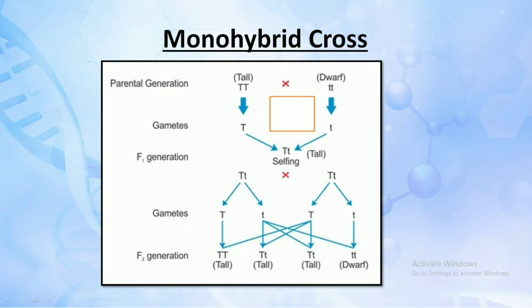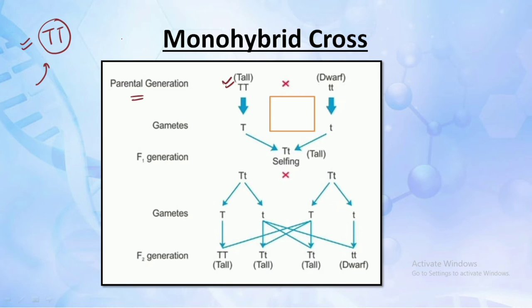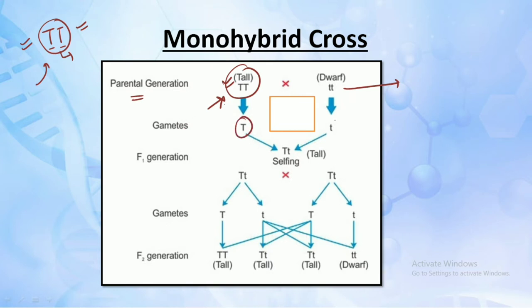In the monohybrid cross, the parental generation is taken as follows: the first parent is capital T capital T. This represents that this parent is homozygous for the tall gene. Homozygous means when both alleles are either of the dominant character or of the recessive character. So the first parent is homozygous dominant for the tall character and the second parent is homozygous recessive for the dwarf character. When we get the gametes, we will have capital T and small t.